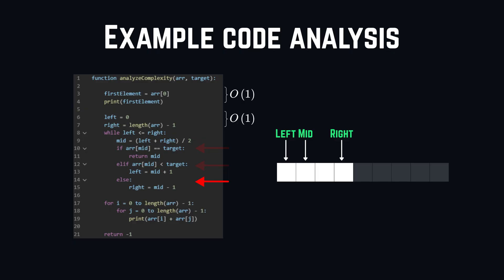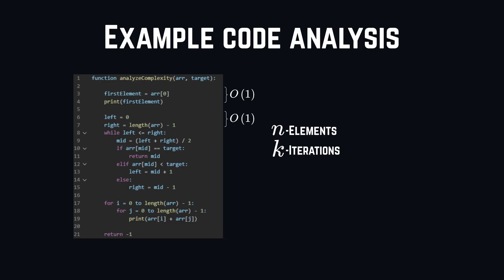So, basically, we are having n elements in k iterations. After every iteration, we are halving the array. And after k iterations, there is only one element left.